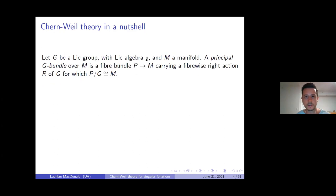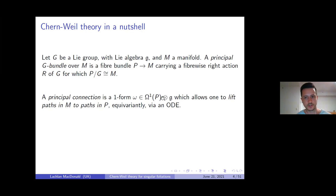A principal fiber bundle is a fiber bundle over a manifold which carries a fiberwise transitive and free action of a Lie group G. Effectively the fibers are all isomorphic copies of G. We single out a special class of one-forms on the total space called principal connection one-forms. These are one-forms on the total space taking values in the Lie algebra of the structure group, allowing you to lift paths from the base manifold to the total space via an equivariant ODE.